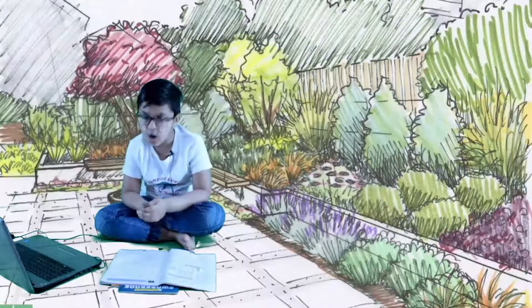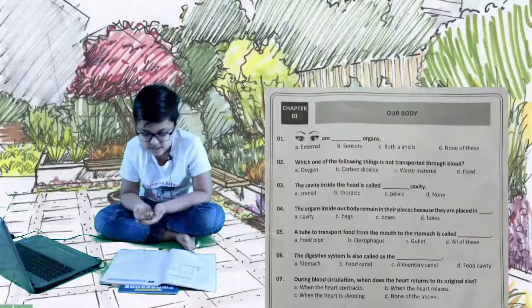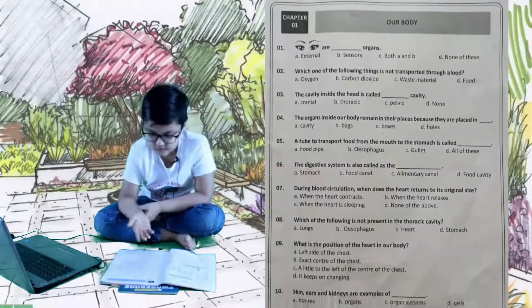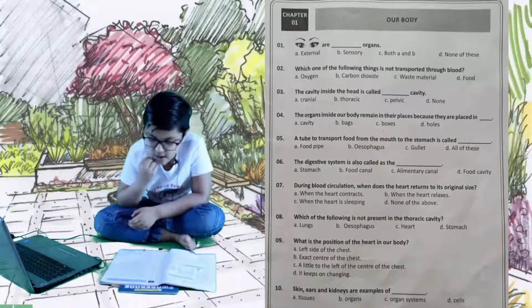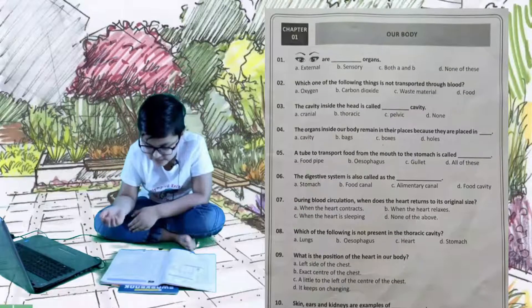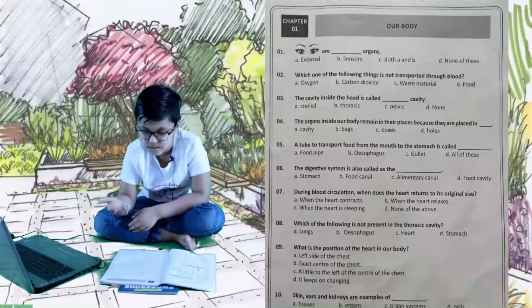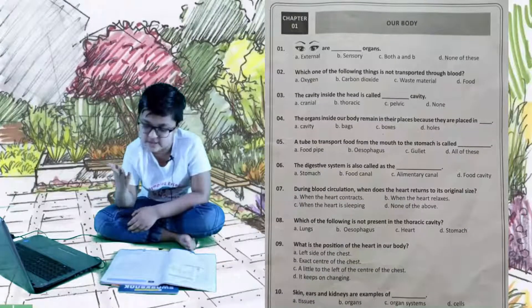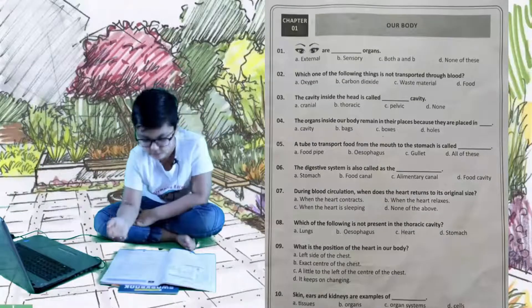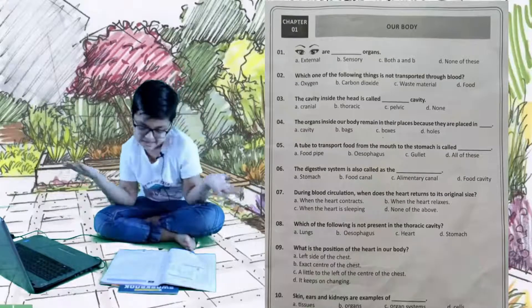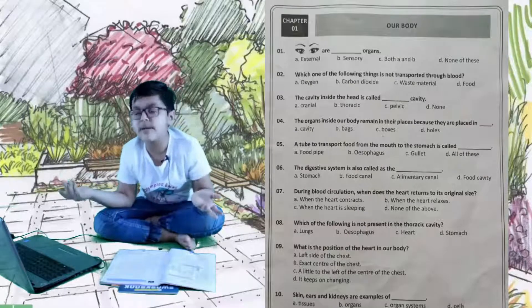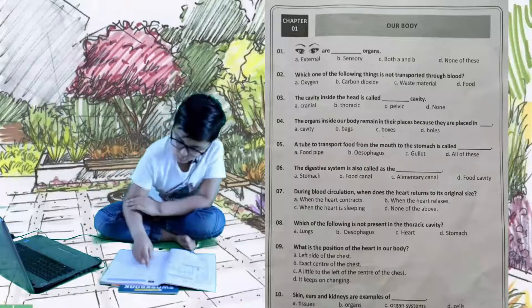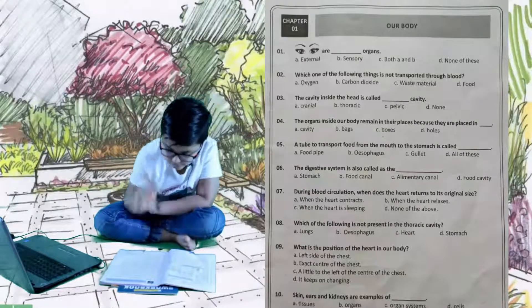Let's start with our first chapter, that is our body. First question is: eyes are dash organs. The options are A is external, B is sensory, C is both A and B, and D is none of these. The right answer is C because it's both external and sensory, so C is very easy and right.